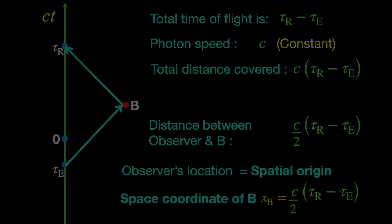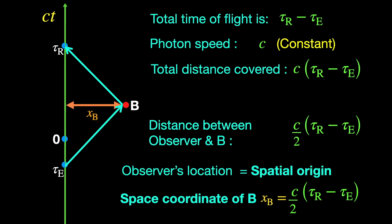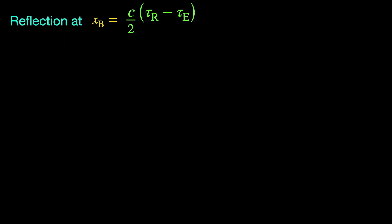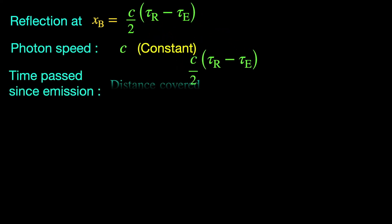Since at the moment of reflection, the photon has covered the distance XB which is half of the total distance traveled with its constant speed C, the reflection must have happened right at the middle of its total flight duration. So, when the reflection happened,